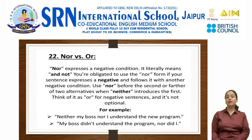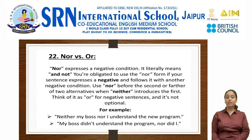The next error is nor versus or. Nor expresses a negative condition — it literally means 'and not.' You are obligated to use nor if your sentence expresses a negative and follows it with another negative condition. Use nor before the second of two alternatives when neither introduces the first. Think of it as or for negative sentences, and it's not optional. For example: neither my boss nor I understand the new program. My boss did not understand the program, nor did I.